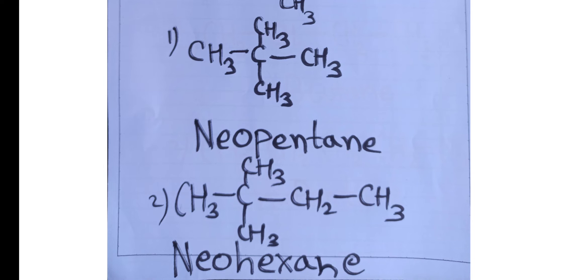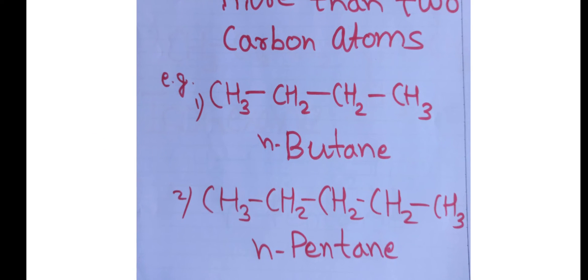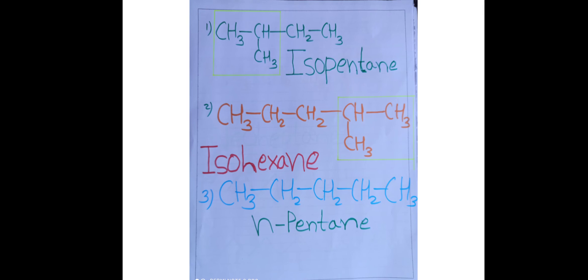In the second neo example, at the second carbon there are two methyl groups and total carbons are six, therefore the name is neohexane. For normal (straight chain) alkanes, no carbon is bonded to more than two other carbon atoms — there is no branch at any position. For example, four carbons with no branch: word root 'but', suffix 'ane', prefix 'n-', so the name is n-butane. Similarly, five carbons straight chain: word root 'pent', suffix 'ane', name is n-pentane.